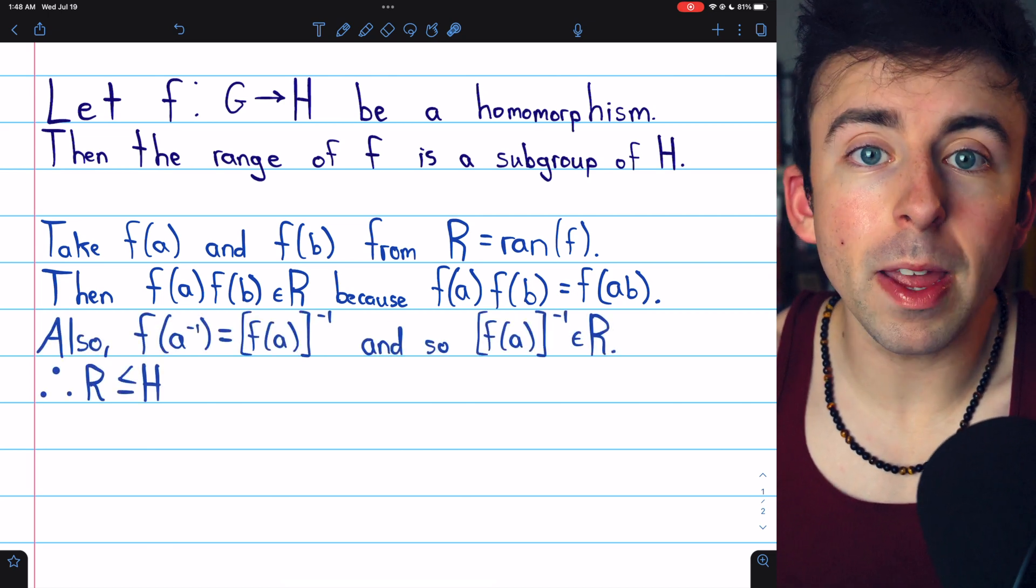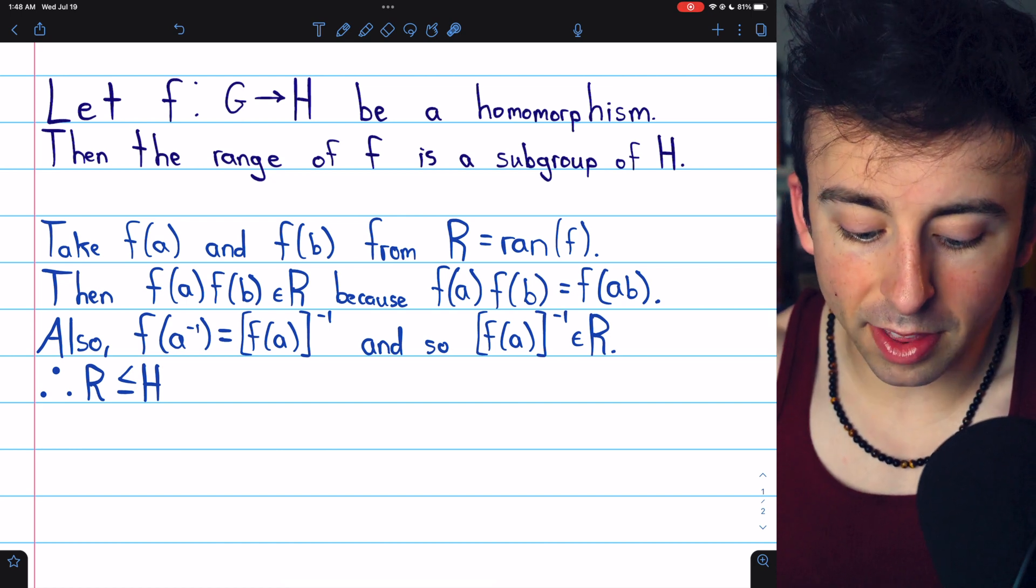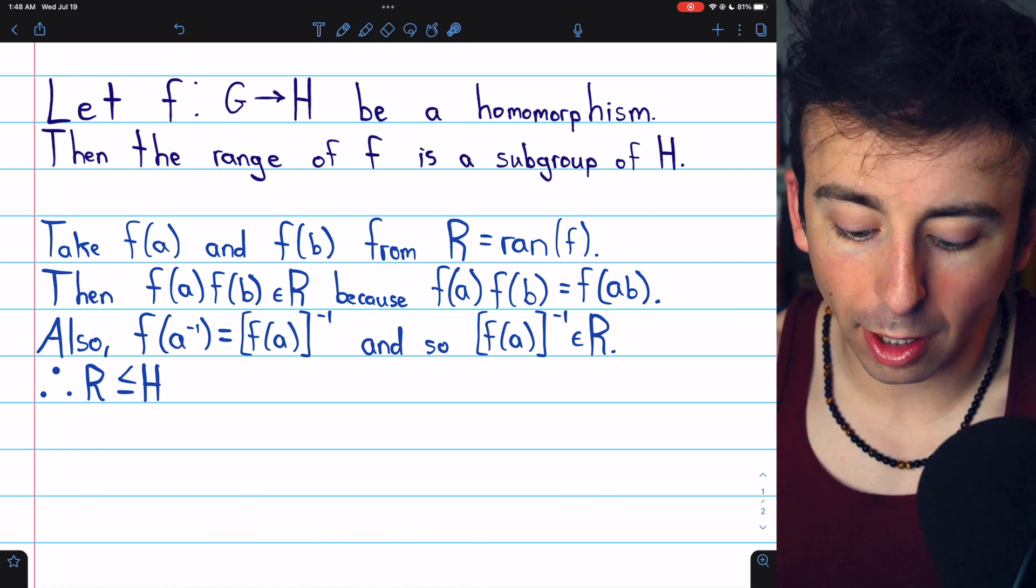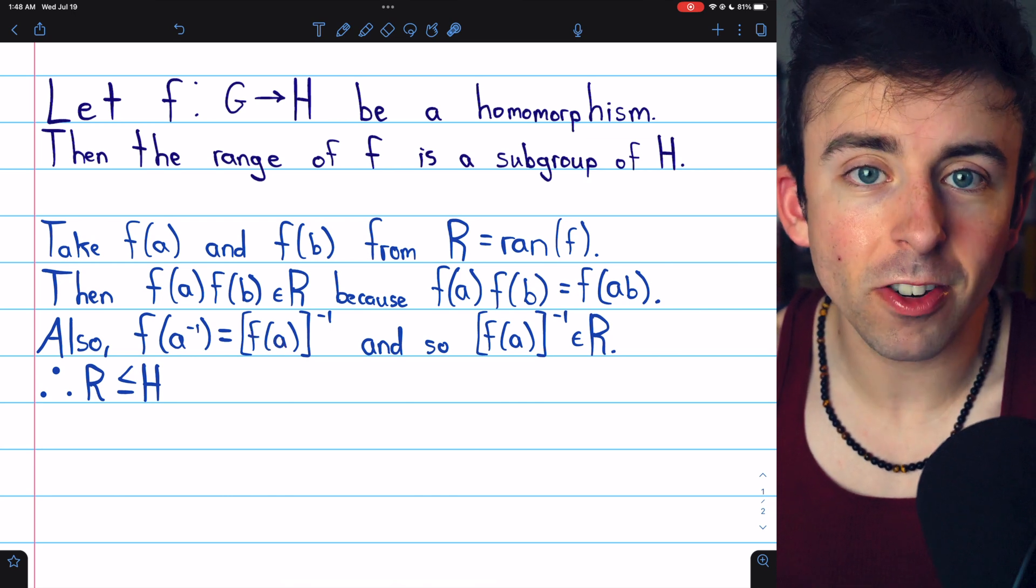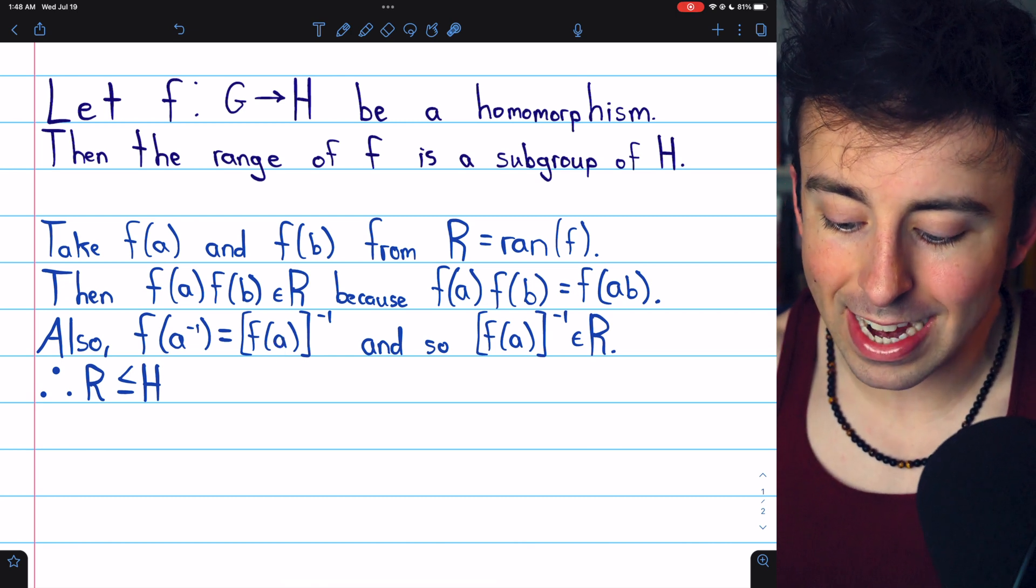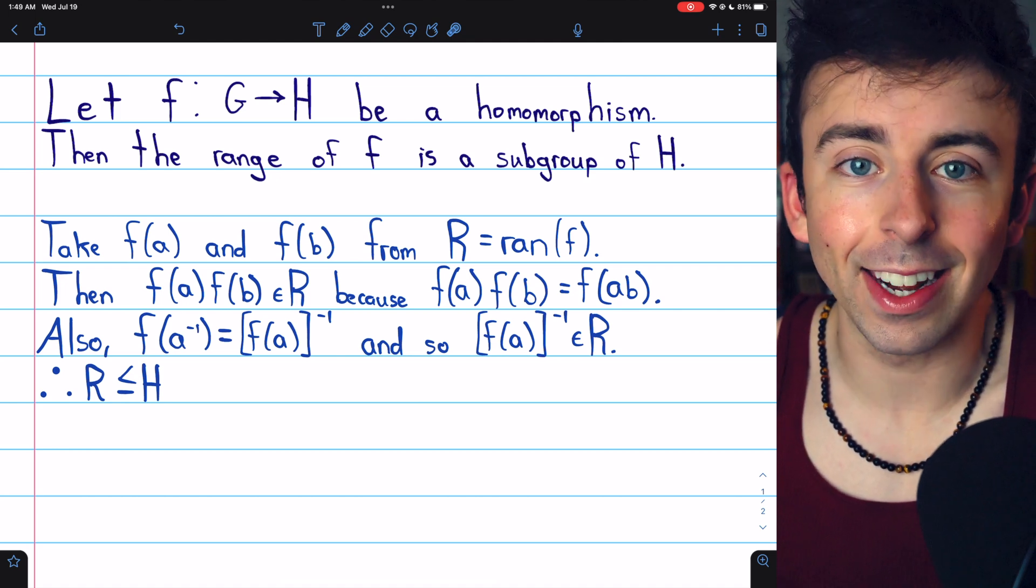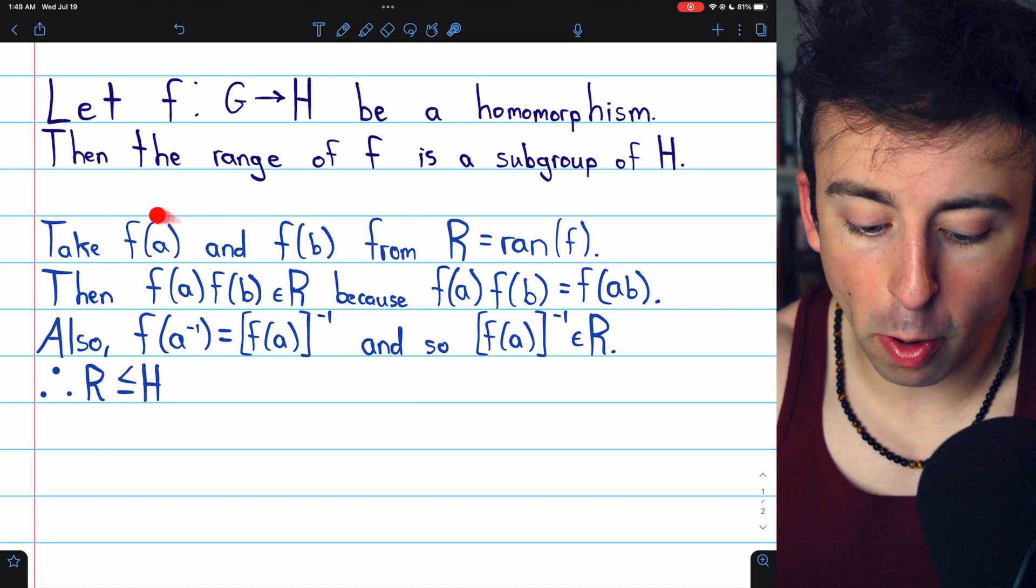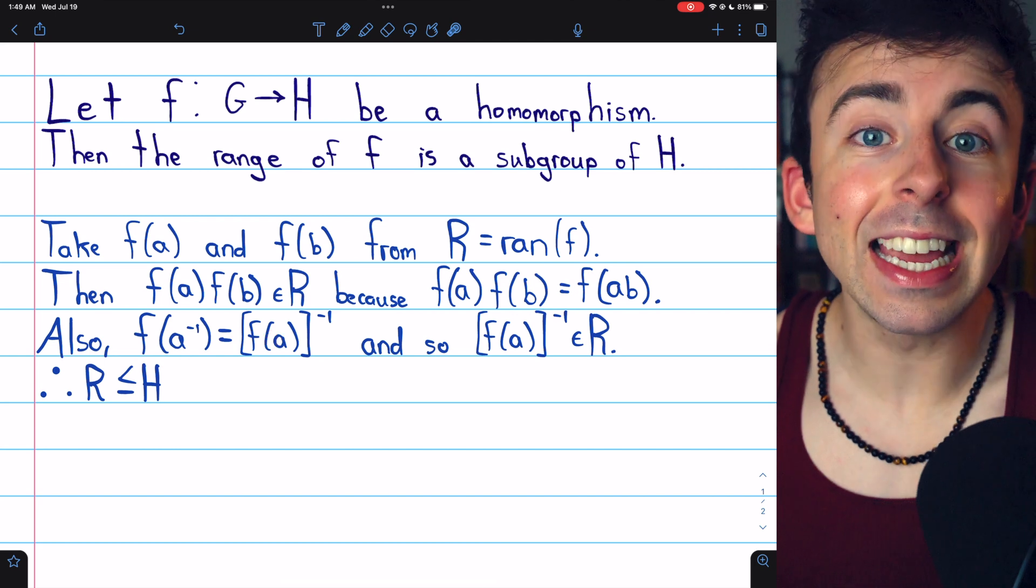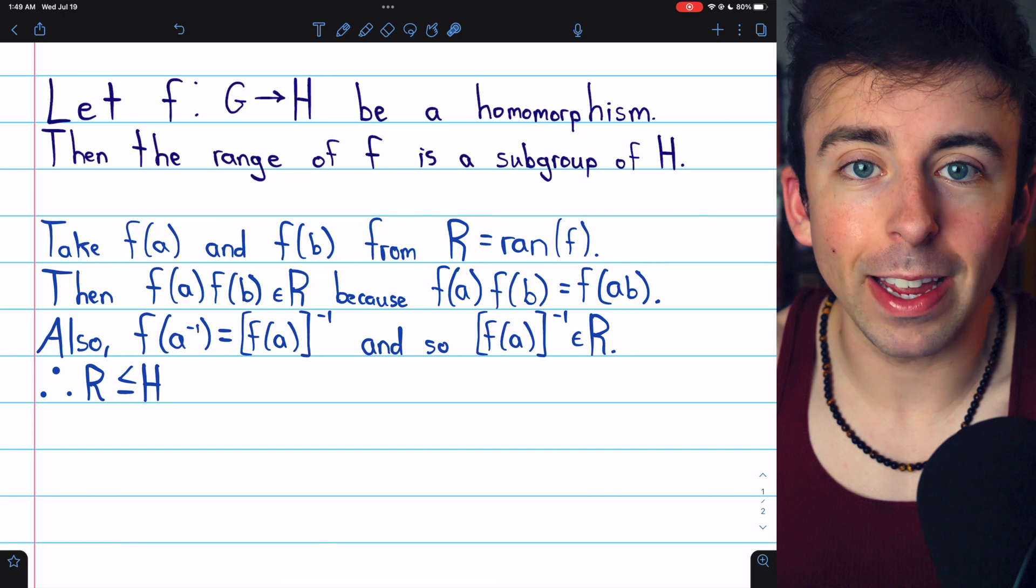As for inverses, it follows from a basic property of homomorphisms we've previously proven, link in the description, that the homomorphic image of an element's inverse is the inverse of that element's homomorphic image. So F of A inverse is the inverse of F of A, and thus indeed the inverse of any element in the range is also in the range. Once more, we take this arbitrary element from the range F of A, and we're guaranteed that the inverse of F of A is the image of F of A inverse, which is clearly in the range of F.